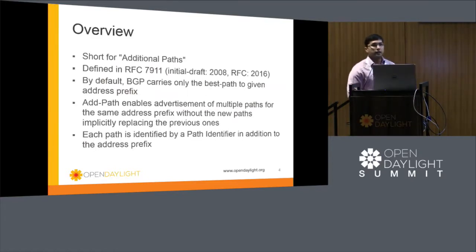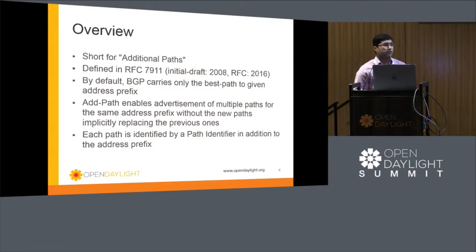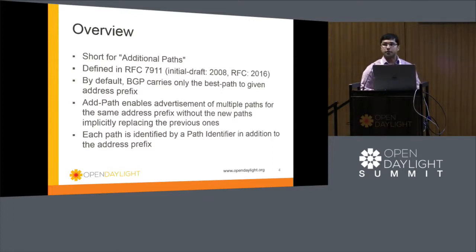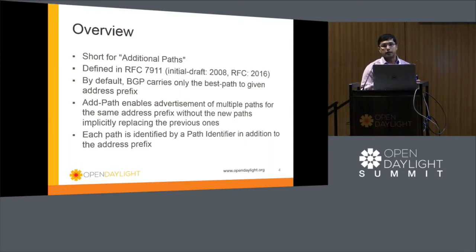The first IETF standard now supported in Boron is called AddPath, defined in RFC 7911. The initial draft for this RFC came in 2008 and it has been converted to an official standard only this year. AddPath is the short form for additional paths, and that name gives you a hint into what the feature is all about. By default, BGP can carry and advertise only the best path for any given destination.